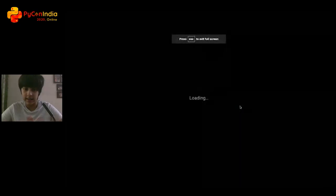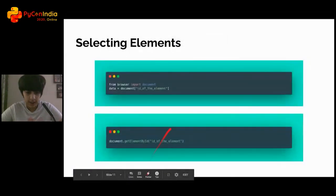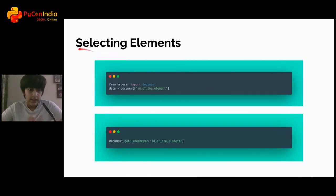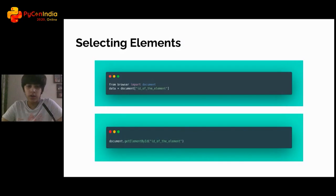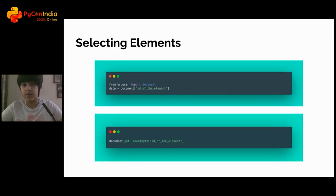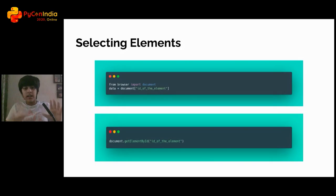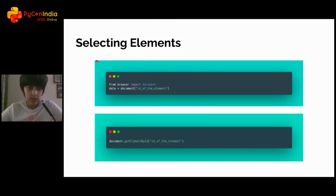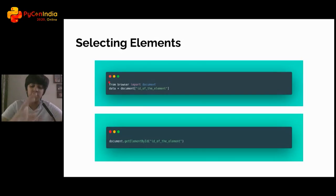Now let's look at the code we're going to write — starting with selecting elements. For those who know the DOM, or Document Object Model, great; others can research it. The DOM is essentially your HTML document as a tree structure. Selecting elements is the most basic DOM operation when working on the client side.